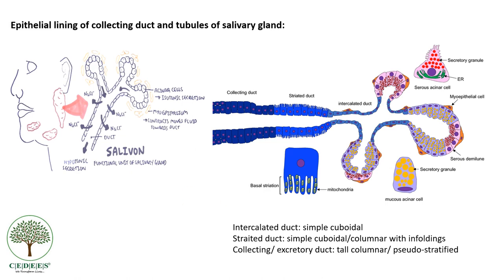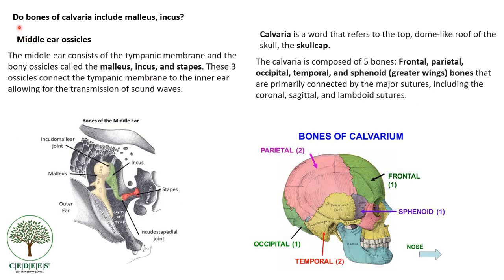Next question: do bones of the calvaria include malleus and incus? Calvaria is the skull cap — the roof of the skull. It includes the frontal, parietal, occipital, temporal, and the greater wing of the sphenoid bones. It does not include the malleus, incus and stapes, which are the middle ear ossicles.